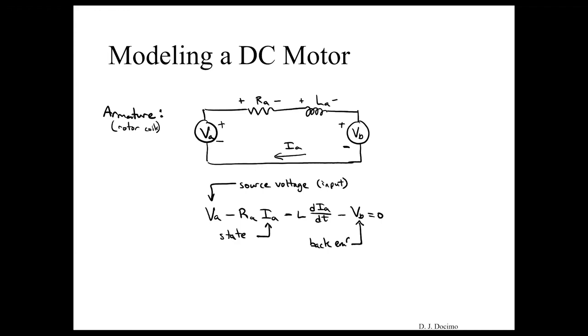And VB is our back EMF in this case. So we can rewrite this equation to get our state space model equation, where we have the rate of change of current is equal to one over LA times the sum of those other voltages there. So that's one part of the DC motor.